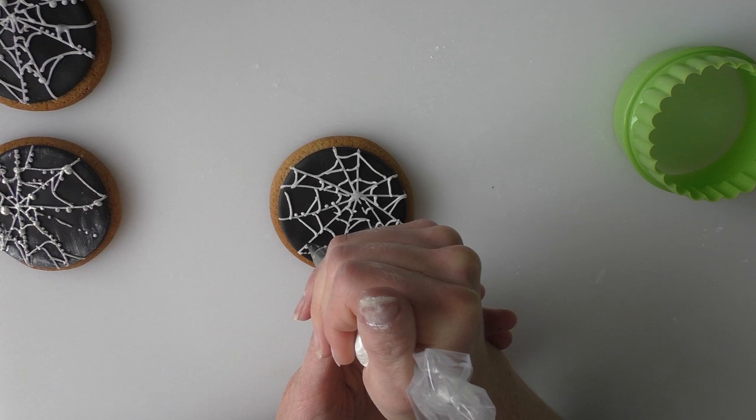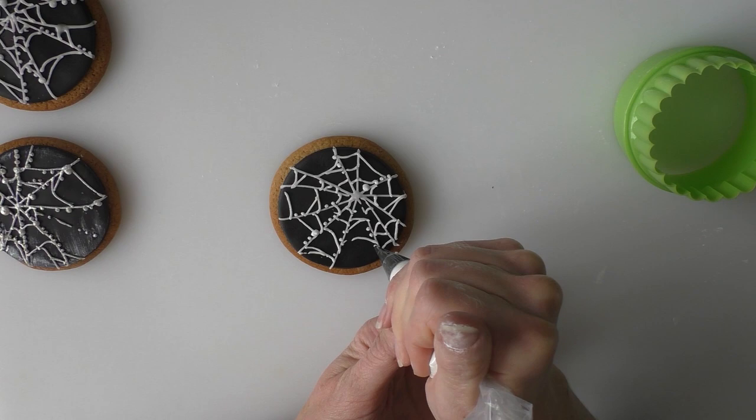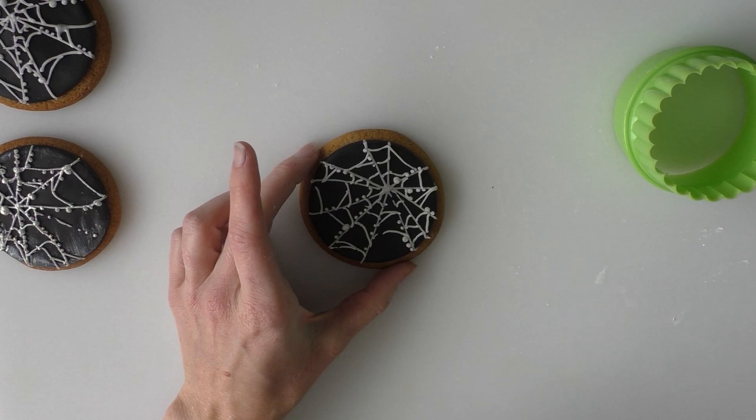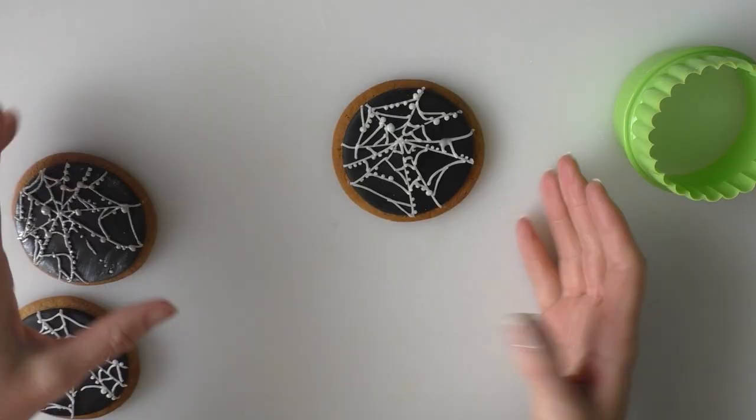And you can leave it like that or if you want, you can add little dots along the bits of your web. That's in the bigger one here and there. And what we'll do is we'll give it a bit of a pearlised dust once it's dried. So it's got a nice bit of a sheen to it.